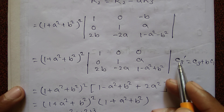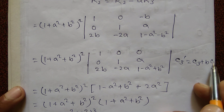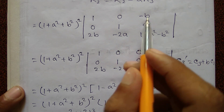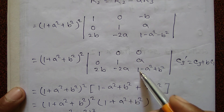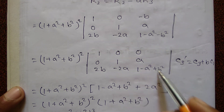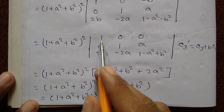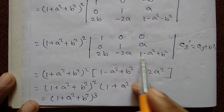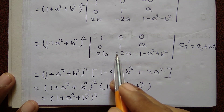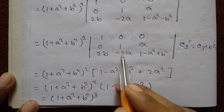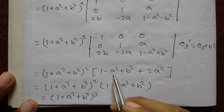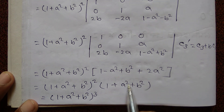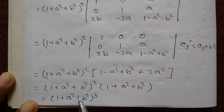Next operation: C3 prime equal to C3 plus b into C1. After the column operation, the first column gives 1 into 1 minus a square plus b square, minus 2a into a square, giving 2a square. Combined: 2a square, 1 plus a square plus b square. This is already a whole square, so the answer is 1 plus a square plus b square, whole cube.